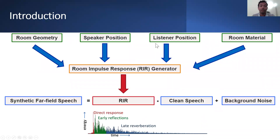A synthetic reverberant speech is created by convolving clean speech with a room impulse response and adding background noise. Room impulse responses for different acoustic environments are generated using a room impulse response generator. An acoustic environment can be described using the room geometry, speaker position, listener position, and room materials. A room impulse response consists of three parts: direct response, early reflections, and late reverberations.